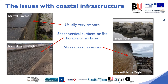While the functionality of these structures varies from flood defense to shipping infrastructure, they share common design elements that make it challenging for marine life to thrive. Looking at these examples, you can see that there are a lot of sheer vertical surfaces that are also very smooth. This means that these structures dry quickly during low tide, which means fewer organisms can live there. A smooth surface is also more difficult for certain organisms to attach to, such as seaweeds.